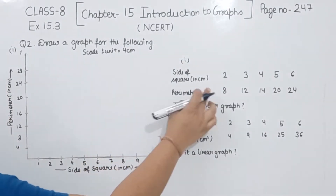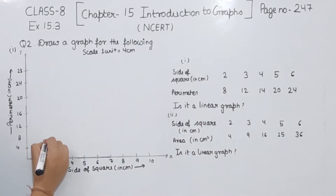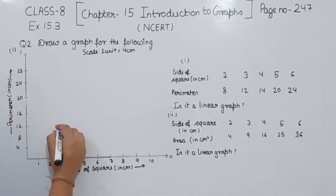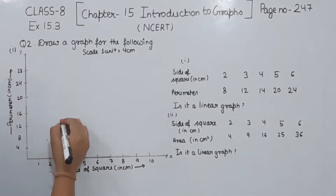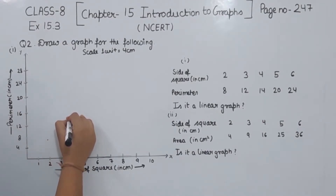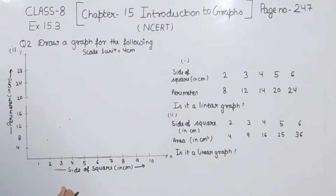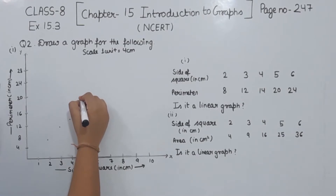When the side of the square is 2, the perimeter is 8 — so this is the point (2, 8). When the side of the square is 3, the perimeter is 12 — so this is the point (3, 12). When the side of the square is 4, the perimeter is 14 — so 14 will be between 12 and 16, around here. When the side of the square is 5, the perimeter is 20 — so this is the point (5, 20).